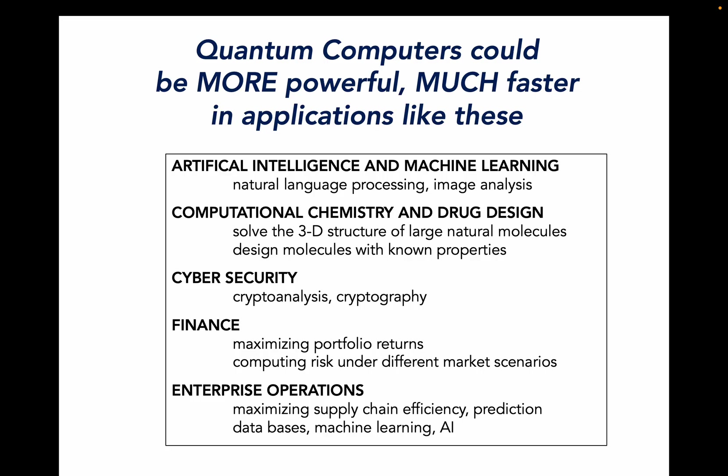In computational chemistry, quantum computers would help us solve the 3D structure and motions in large natural molecules to help design molecules and drugs. In cybersecurity, quantum computers can provide much stronger cryptography and crypto analysis of breaking codes. In finance, the additional power would help maximize portfolio returns and compute risk under different complicated market scenarios. And in enterprise operations, maximizing supply chain prediction and creating new types of databases, machine learning, and artificial intelligence.